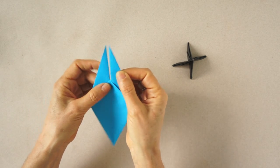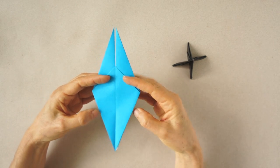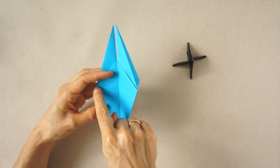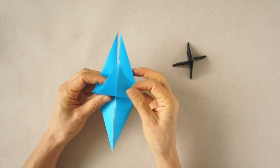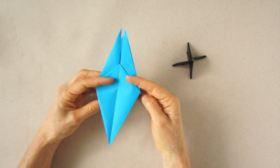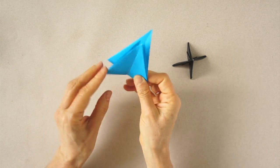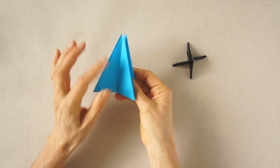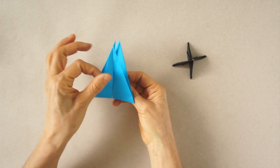We have these two flaps here. Now we are going to bring up this flap, making a fold here. Turn it over and repeat. We have the four flaps pointing up.